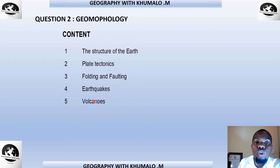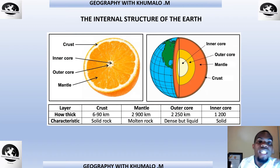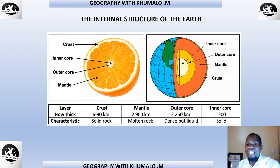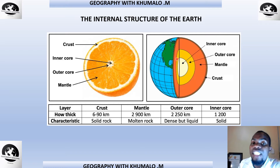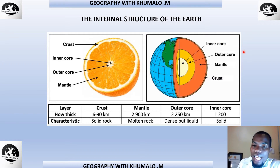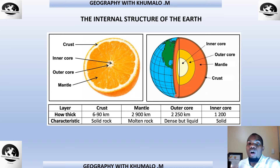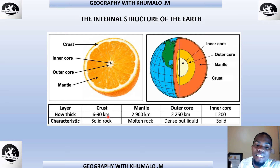Now let's look at the internal structure of the earth. Remember, Grade 10s, you must know how to label the diagram and know which layer comes after which. The earth's internal structure looks like this — we have an inner core, an outer core, a mantle, and a crust. You must know all four layers of the internal structure of the earth.